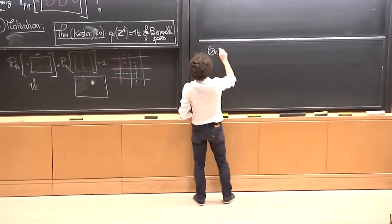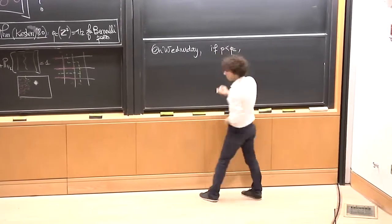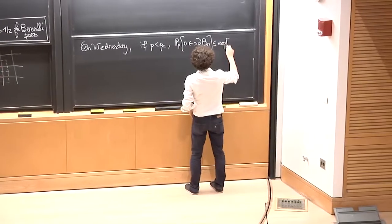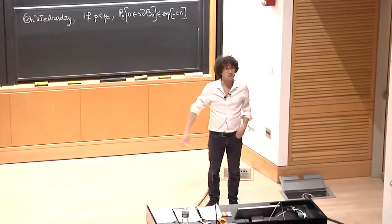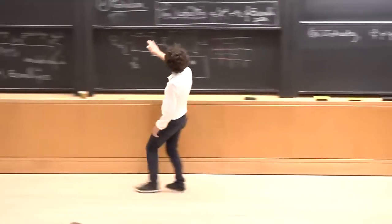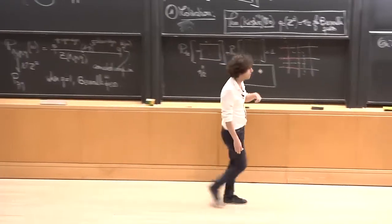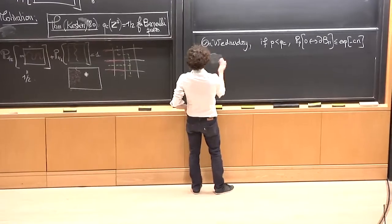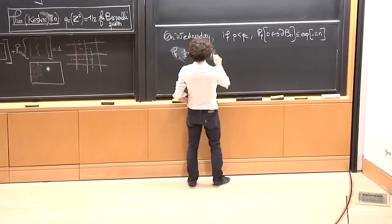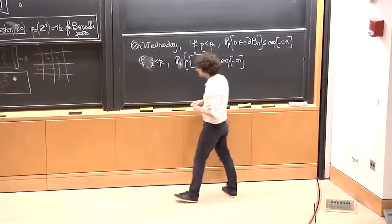Why is this useful? Notice first: on Wednesday, we proved that if P is smaller than P_c, then the probability that 0 is connected to distance n decays exponentially fast. But then, if one half was strictly smaller than P_c, the crossing probability would also decay exponentially fast — which contradicts the fact that it doesn't decay at all. That already tells you that P_c has to be smaller or equal to one half.